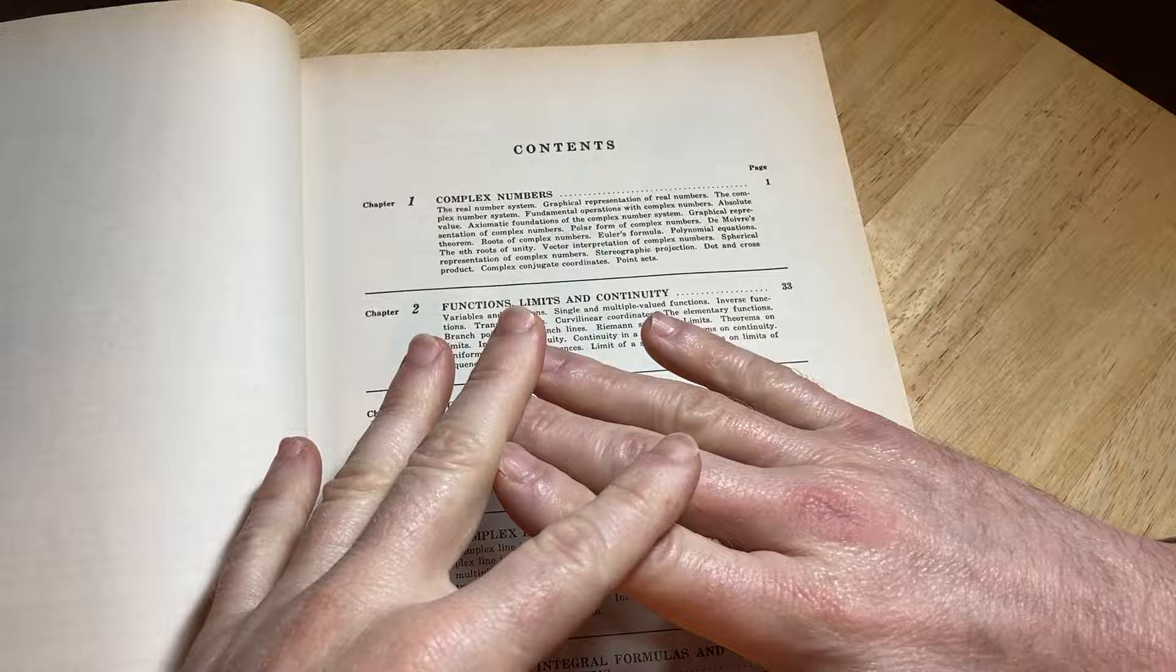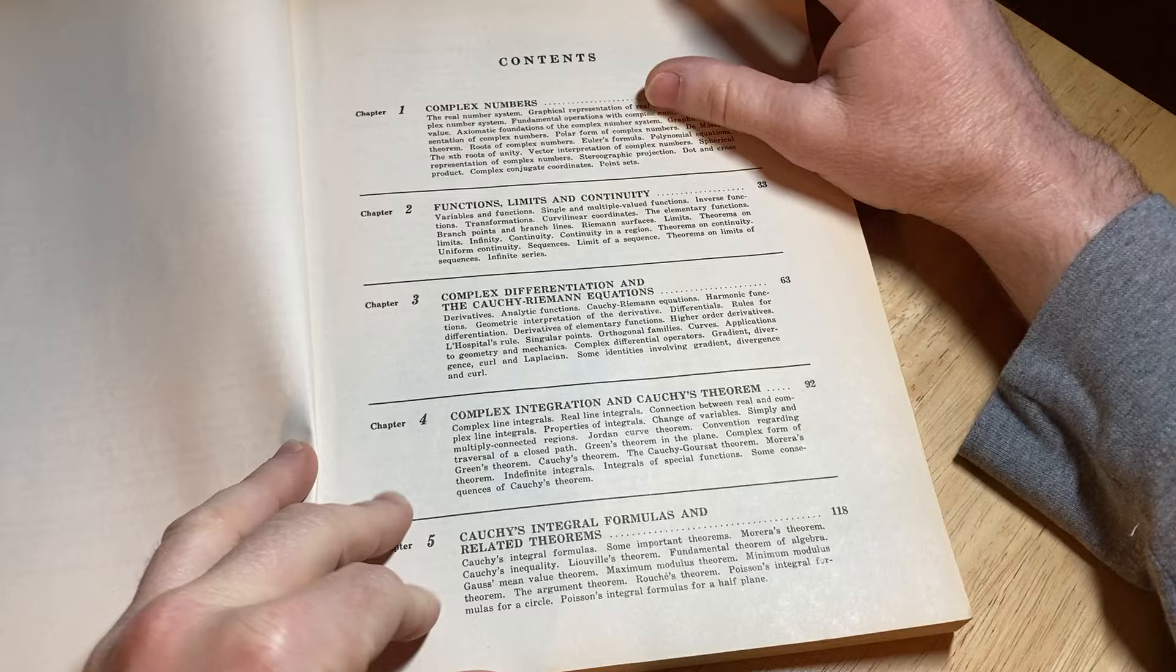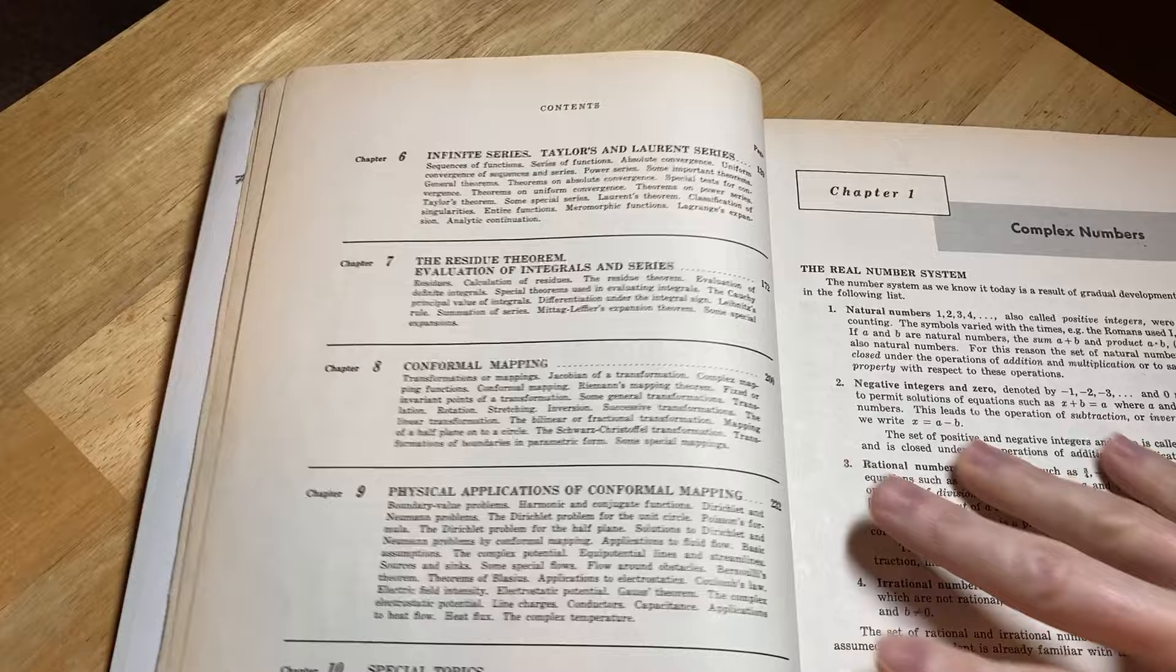Functions, limits, and continuity - it has a lot of stuff. Complex differentiation and the Cauchy-Riemann equations. All the topics you're going to study in a first-year complex variables course as an undergrad math major. This is math major stuff, typically, though engineers study this too.